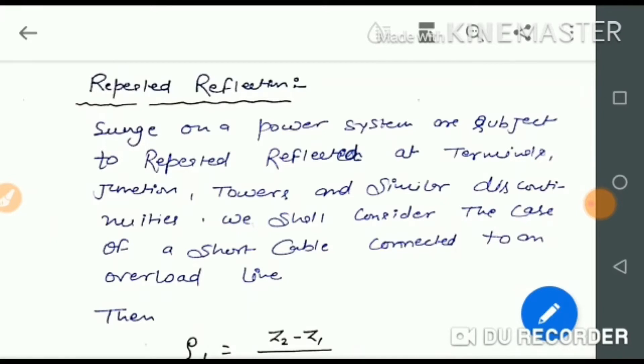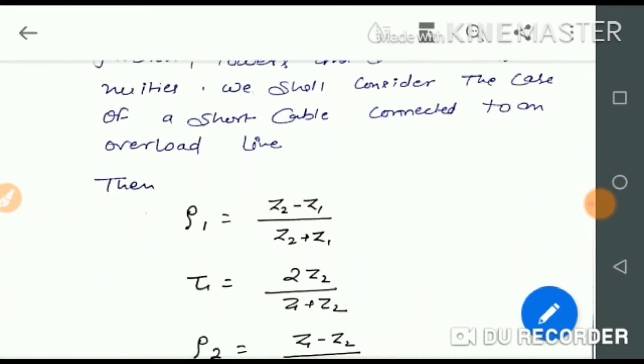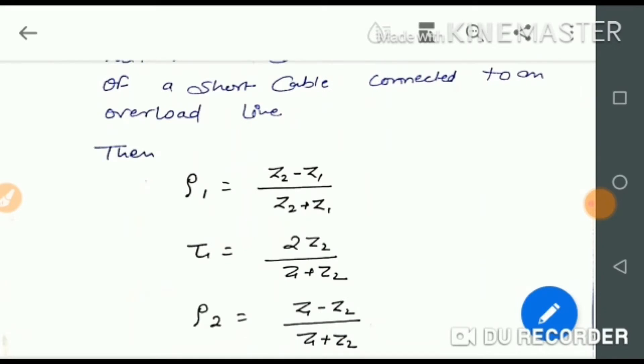First, if we are talking about surge, surge impedance is the ratio of voltage and current. This is also called the V upon I characteristic.